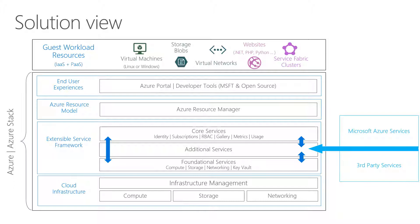These additional services are not available out of the box — they come as optional additional resource providers that you can install on demand, so you're not wasting resources for resource providers you don't need. All these services are built on our foundational services like Compute, Storage, Networking, and Key Vault. The bottom box — Cloud Infrastructure — is responsible for Infrastructure Management, containing Compute, Storage, and Networking, which is the translation of Azure Stack into the underlying components like, for example today, Hyper-V.